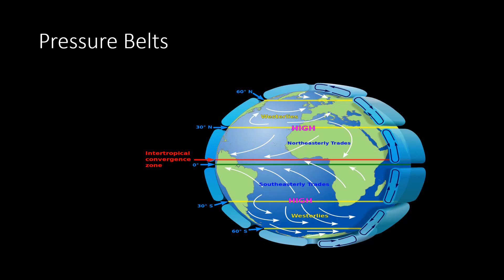Now, the pressure belts — there are seven pressure belts. The first one is the equatorial low pressure belt, then the subtropical high pressure belt, the subpolar low pressure belt, and the polar high pressure belt. Similarly, in the southern hemisphere: the subtropical high pressure belt, the subpolar low pressure belt, and the polar high pressure belt. That is how the seven pressure belts exist in the earth's atmosphere.